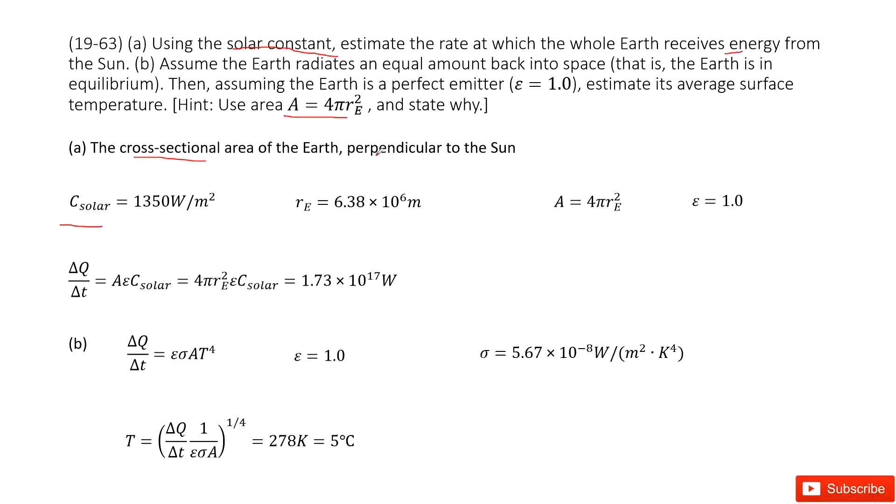Then we can find the function in our textbook to find the energy, the rate of energy loss for the solar. You use the constant of the solar times the epsilon and then times the surface for this cross-sectional area of the Earth. So then you input all the given quantities inside. You get the answer here.